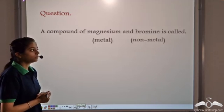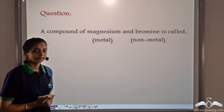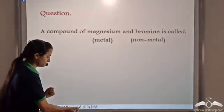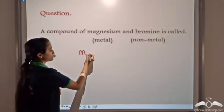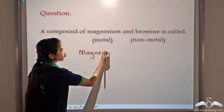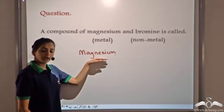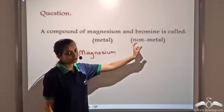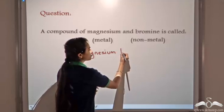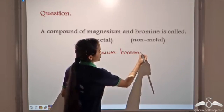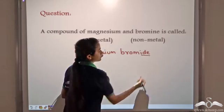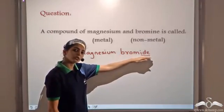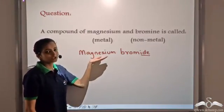So if there is a compound of magnesium and bromine, what is it called? Magnesium is a metal and bromine is a non-metal. The metal is written as it is, then the non-metal follows. The suffix "-ide" is added to the non-metal and merged with the name — giving us "bromide". So the name of this compound is magnesium bromide.